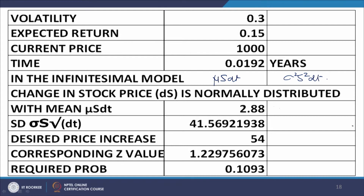The desired price increase is 54. Since dS is normally distributed, we calculate the z value and use the standard normal distribution tables. Z = (x - x̄)/σ. The desired price increase is 54, the mean of dS is 2.88, and the standard deviation is 41.56. So z = (54 - 2.88)/41.56 ≈ 1.23. Using normal distribution tables, the required probability is equal to 0.1093.